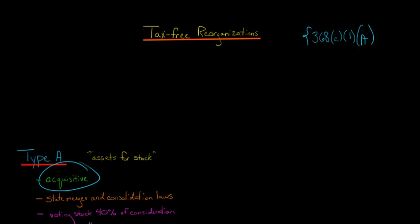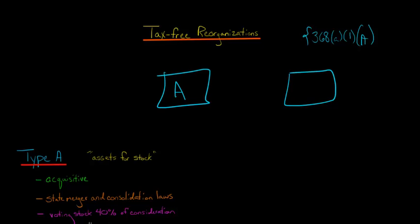Type A is an acquisitive reorganization. What does acquisitive mean? Basically, you've got the acquiring corporation, and then you've got a target corporation that you want to acquire. You're going to transfer some assets and some of your voting stock in exchange for the target's stock.